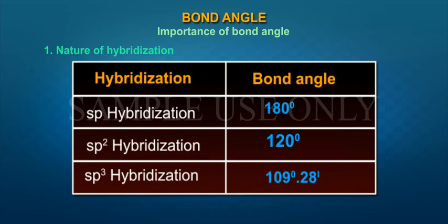Hybridization and Bond Angle: SP Hybridization 180 degrees, SP2 Hybridization 120 degrees, SP3 Hybridization 109 degrees 28 minutes.